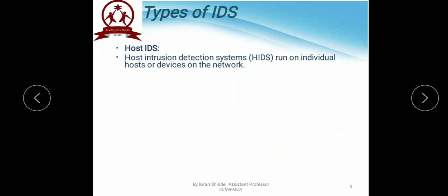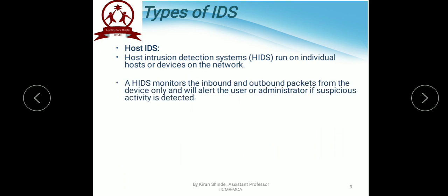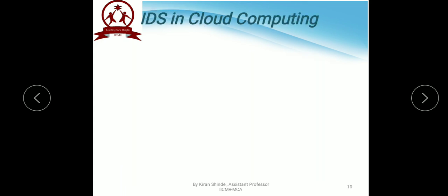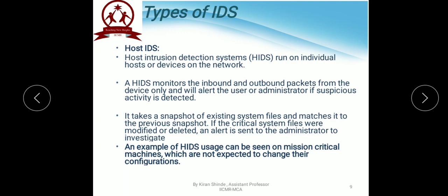The second type is Host IDS — Host Intrusion Detection System — which runs on individual hosts or devices on the network. A simple example is an antivirus installed individually, or a Windows firewall set individually on every device. HIDS is used on mission-critical machines not expected to change their configuration, such as online banking systems, railway and aircraft operating and control systems, and electric power systems that would adversely affect the business if they fail.